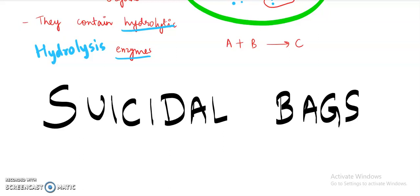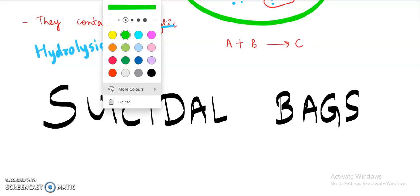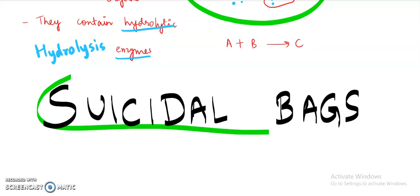Why lysosomes are known as suicidal bags of the cell? Because once their membrane gets broken, hydrolytic enzymes are released which help in killing the other cell organelles. So ultimately, if there will be no cell organelles, the cell has to die, because all the functions required to sustain a cell are done by the cell organelles. So no cell organelles means no cell.